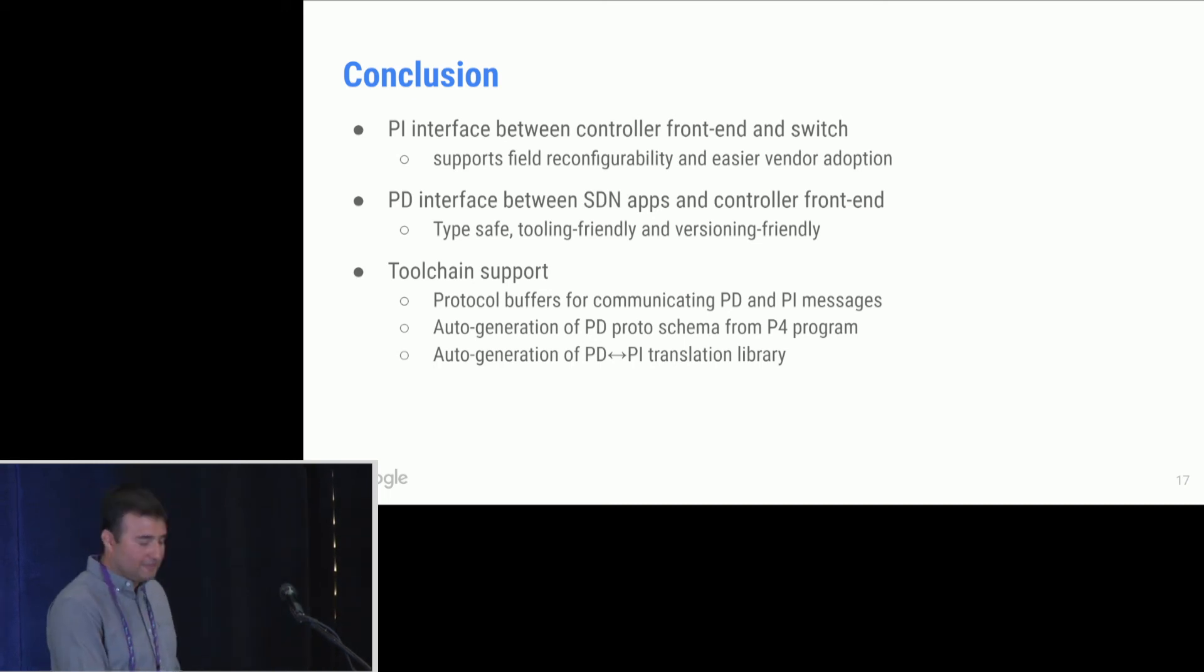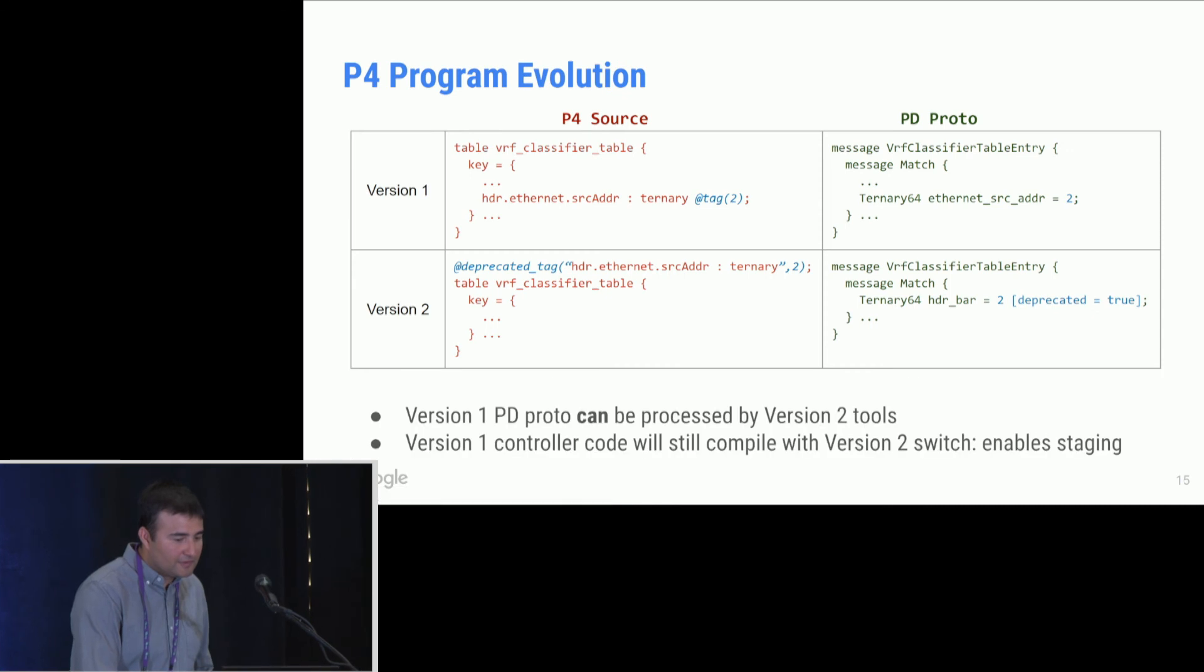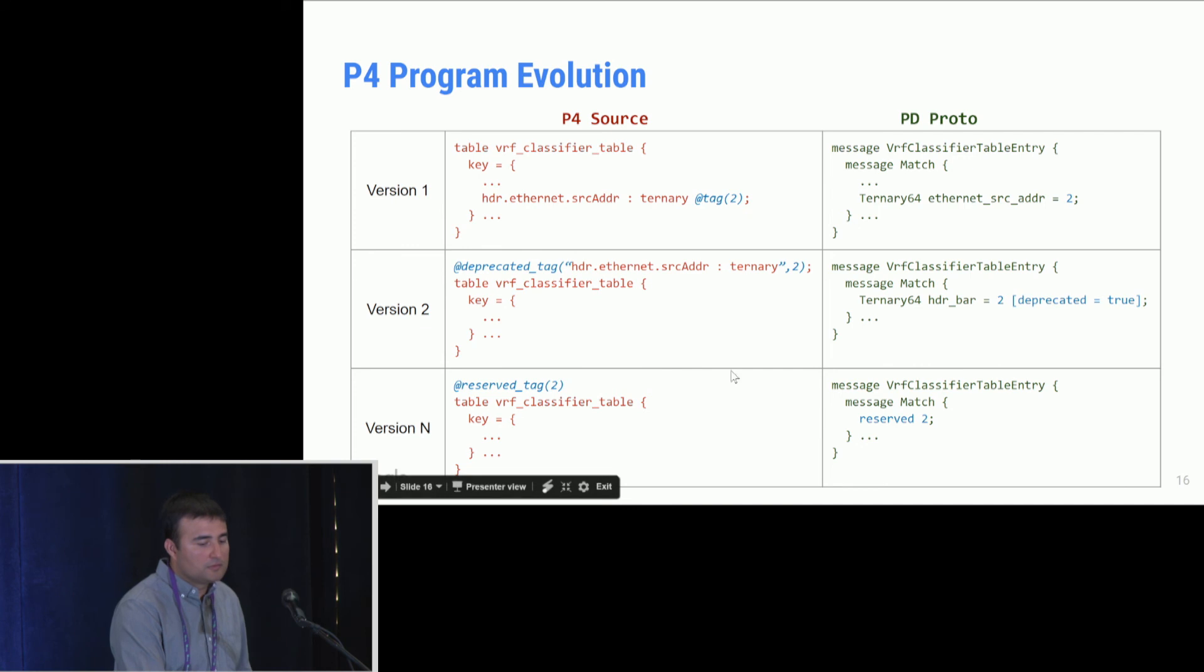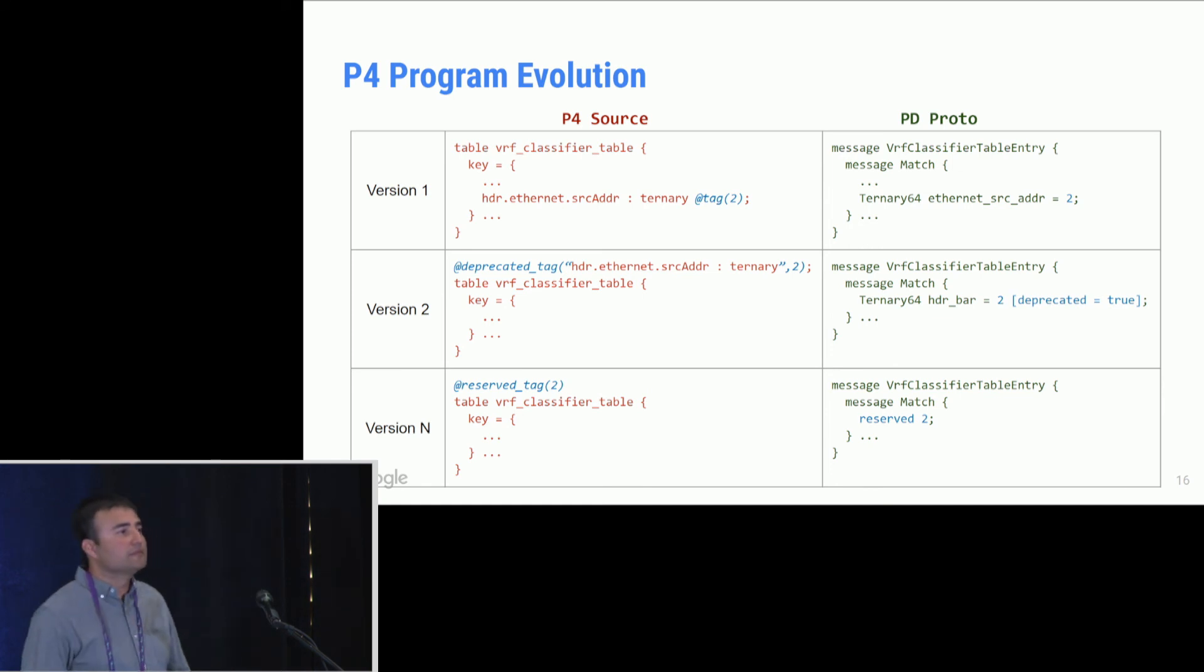So I have one question. If you jump back to the slide with version one, version two, version end. So what happens behaviorally in version two, if a controller app is sending a message with that field that's been deprecated? Yeah, so that's a good question. So behaviorally, that would be rejected by the switch. So if the switch has already been upgraded to version two, then the flow entry message would be rejected, but at least your app is still going to build. Thank you.